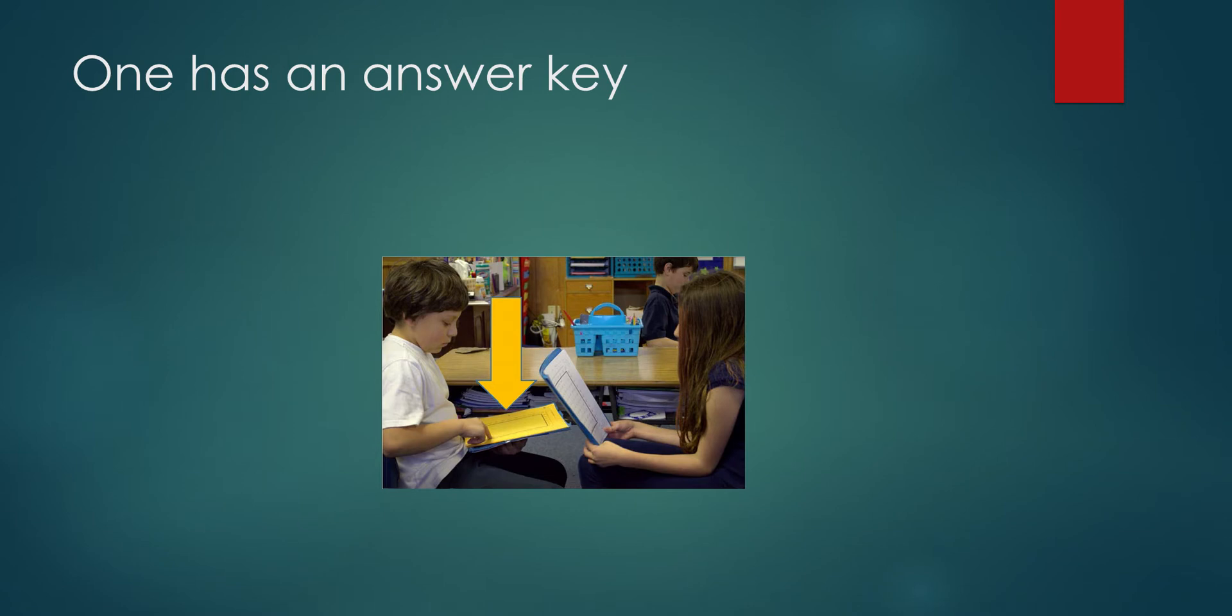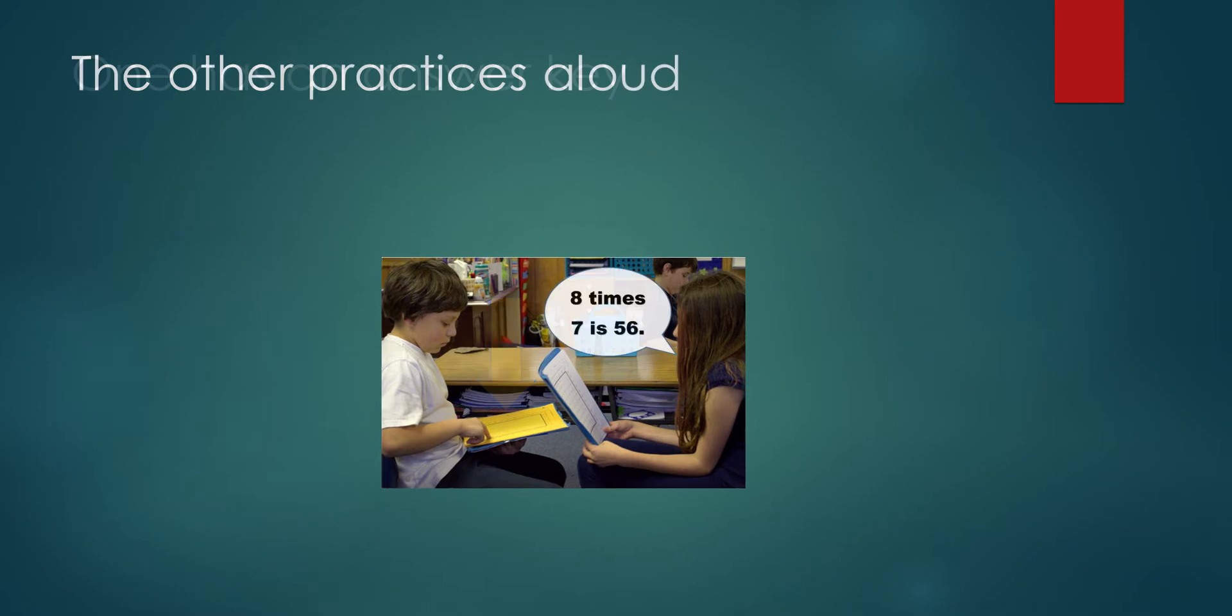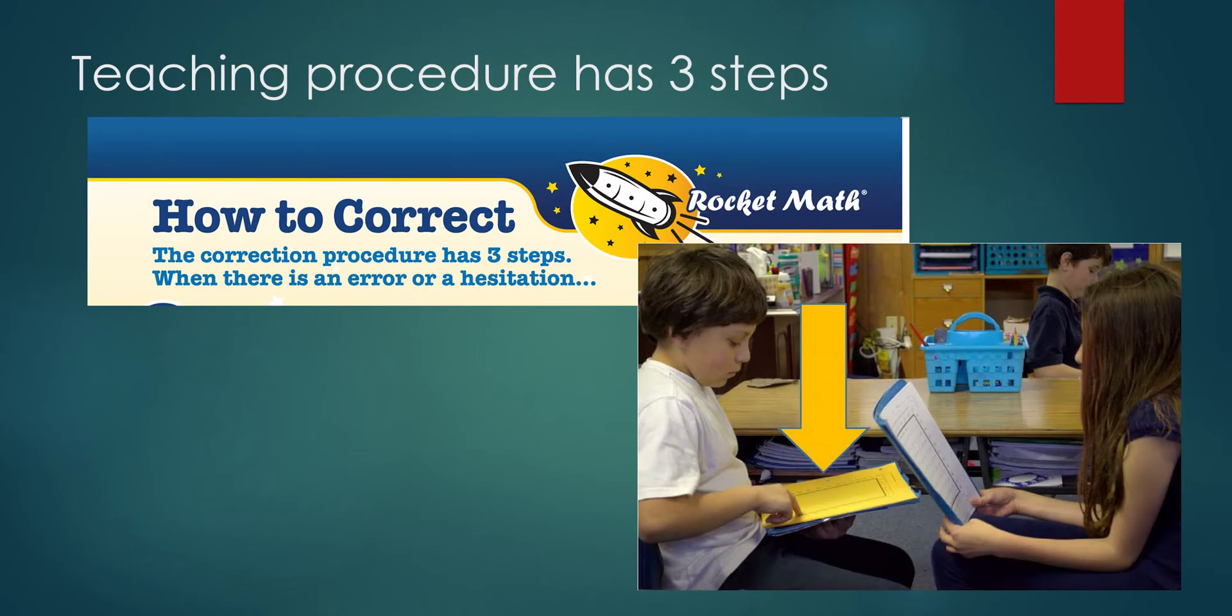One student has an answer key and checks, while the other student reads the problem and then answers them from memory. If the student hesitates or makes an error, the checker follows a specific three-step teaching procedure.